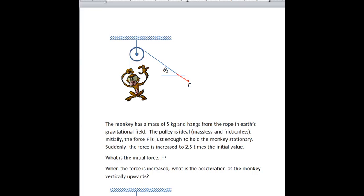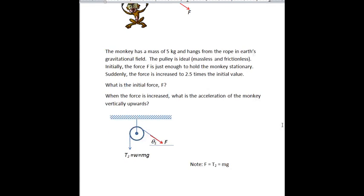So the questions are: what's the initial force F, and secondly, when the force is increased, what is the acceleration of this unwitting passenger vertically upwards? To answer the first question, we need to look at the free body diagram of the rope.